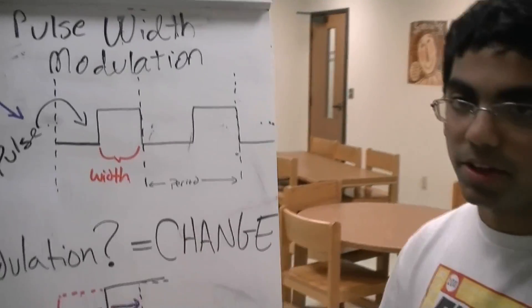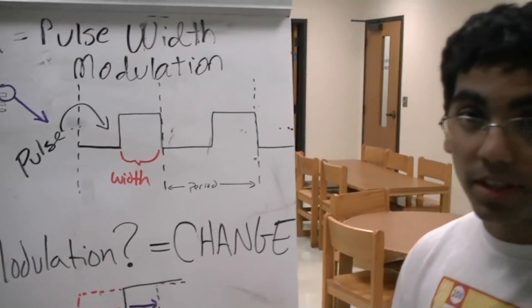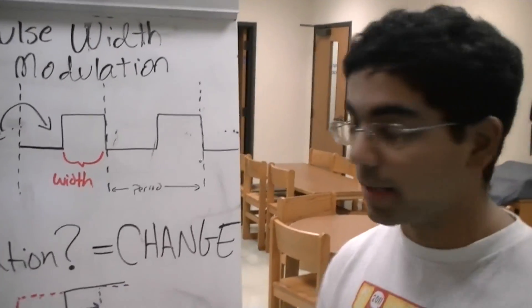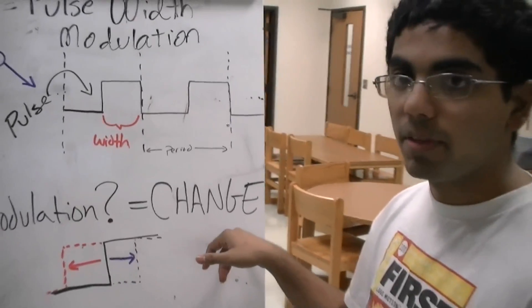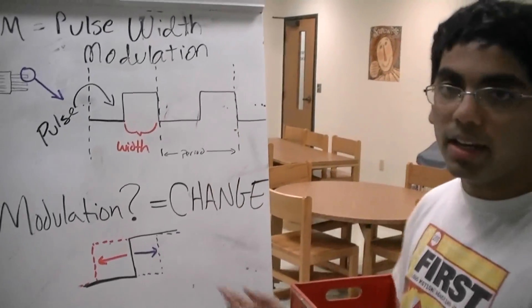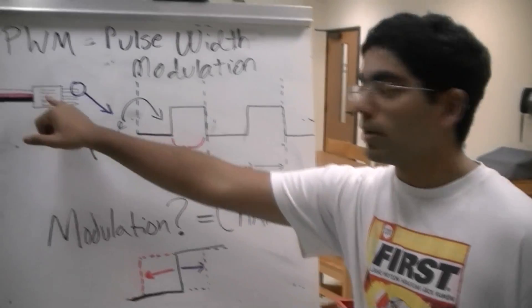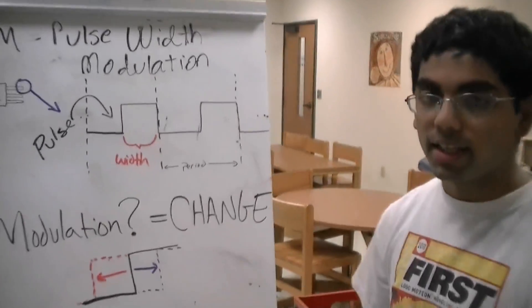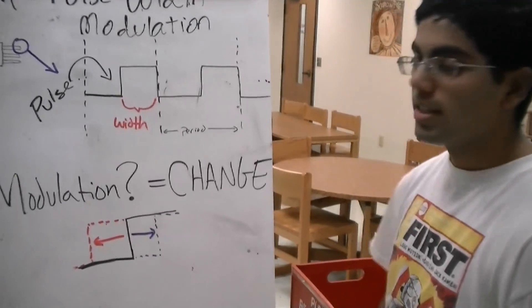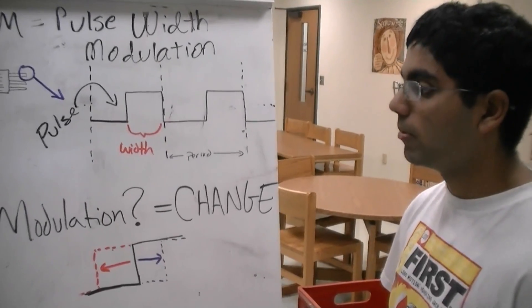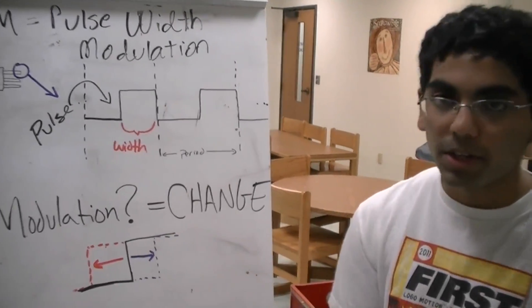So let's say we keep on mailing a bunch of letters. But in one specific letter, we want to change what's written inside it. That would be our modulation. So we change that, and then we send it again. And in this entire time, the white wire would act as the mailman, taking it from one place to another. So in our scenario, it would be taking it from the C-Rio to the Jag.